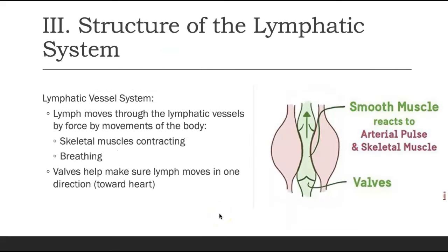Lymphatic vessels are similar to veins in that they have valves ensuring one-way flow. Lymph moves through these vessels by relying on skeletal muscles surrounding them — when those muscles contract, they put pressure on the vessel and push fluid toward the heart, with valves preventing backward flow. These vessels also lie close to arteries, so arterial pulsing helps move lymph. Additionally, as we move into the thorax, the respiratory pump — simply breathing — helps move lymph in the right direction.